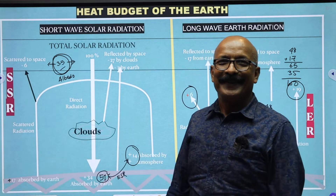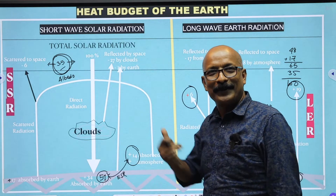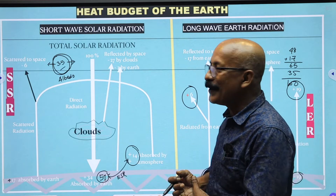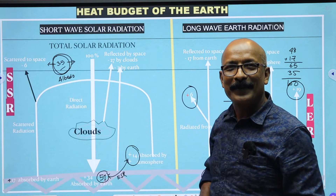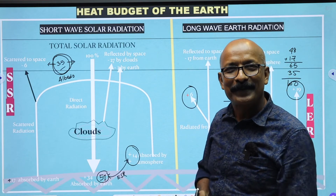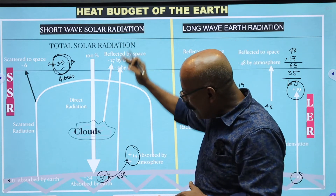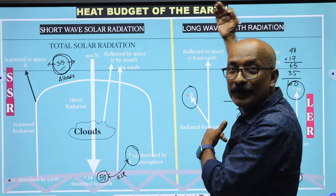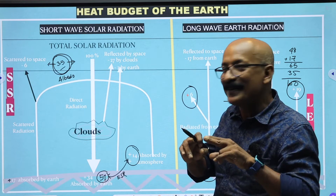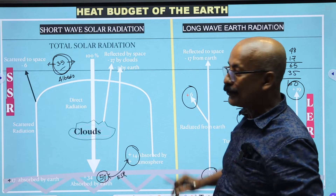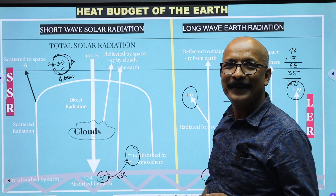Hi, dear students. Welcome back to this channel. Today we will discuss a very important topic from climatology: the heat budget of the earth. We will see how much solar radiation is coming towards the surface of the earth and how much is going back to space. Solar energy is balanced — the incoming and outgoing solar radiation are equal. That is why this is called the heat budget or heat balance of the earth.